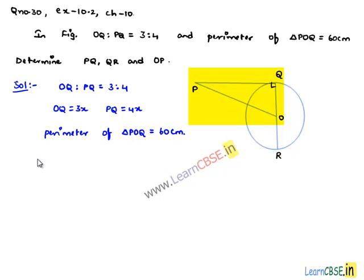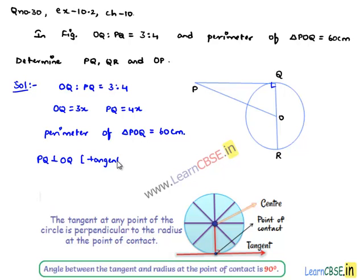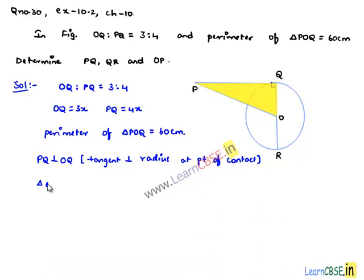We know that PQ is perpendicular to OQ since at the point of contact, the tangent is perpendicular to the radius. Therefore, triangle OPQ is a right angle triangle.